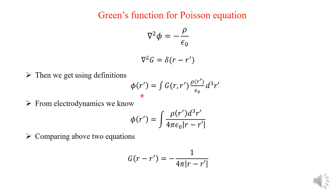From the definition, we can write the solution for the Poisson equation: phi of r is equal to the integral of Green Function times rho prime over epsilon naught, d³r prime.